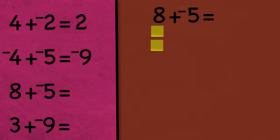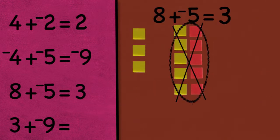8 plus negative 5 is equal to 3. Again, the signs are different, and I have more positives than negatives, so my answer will be positive.